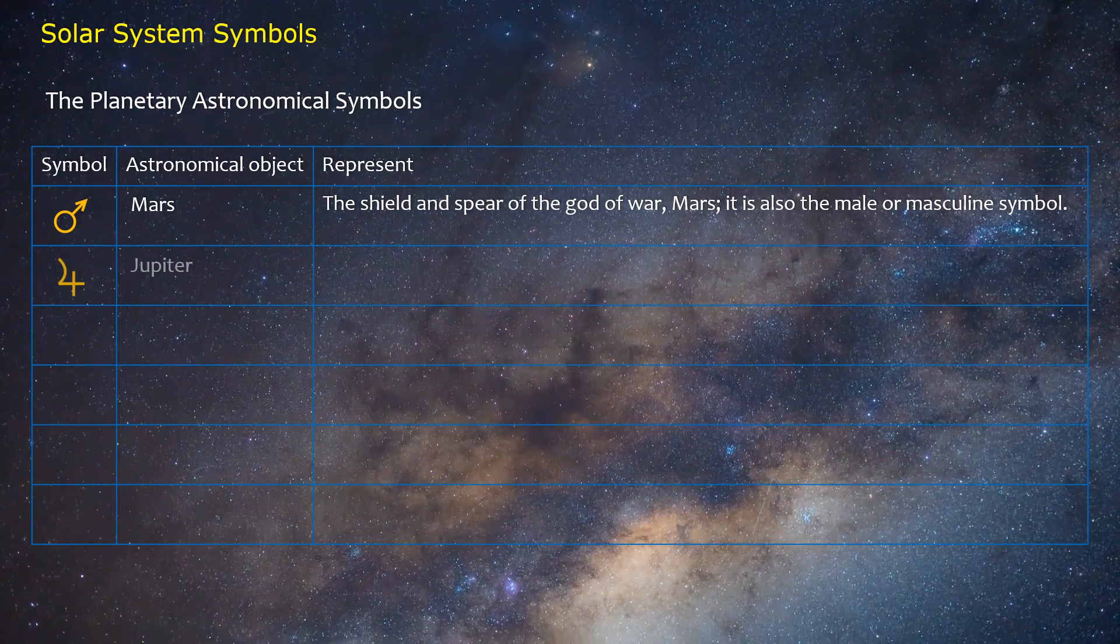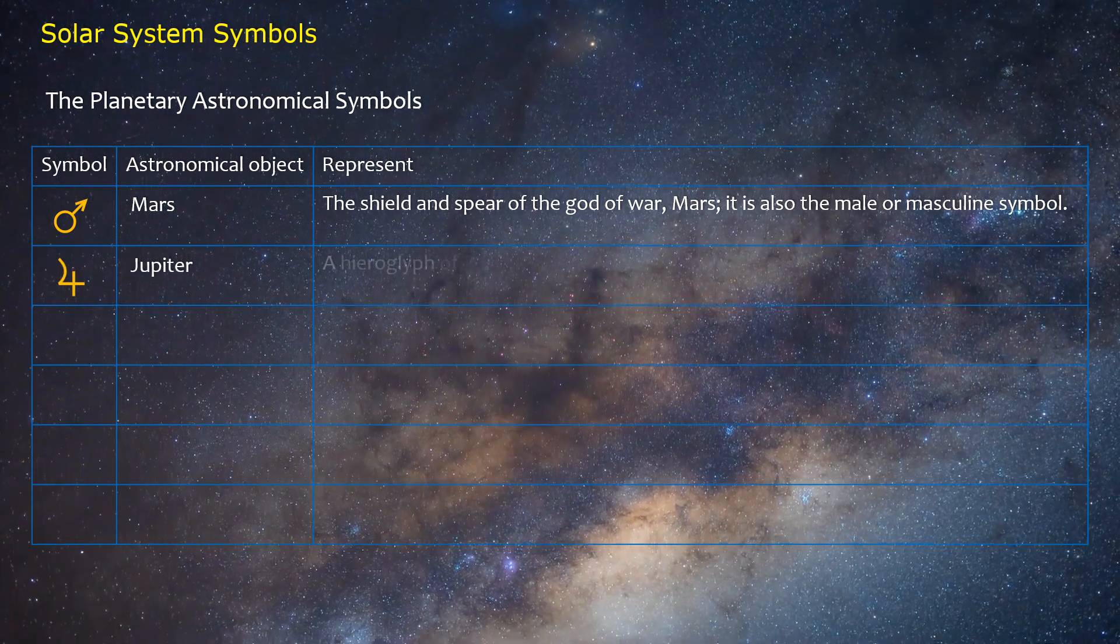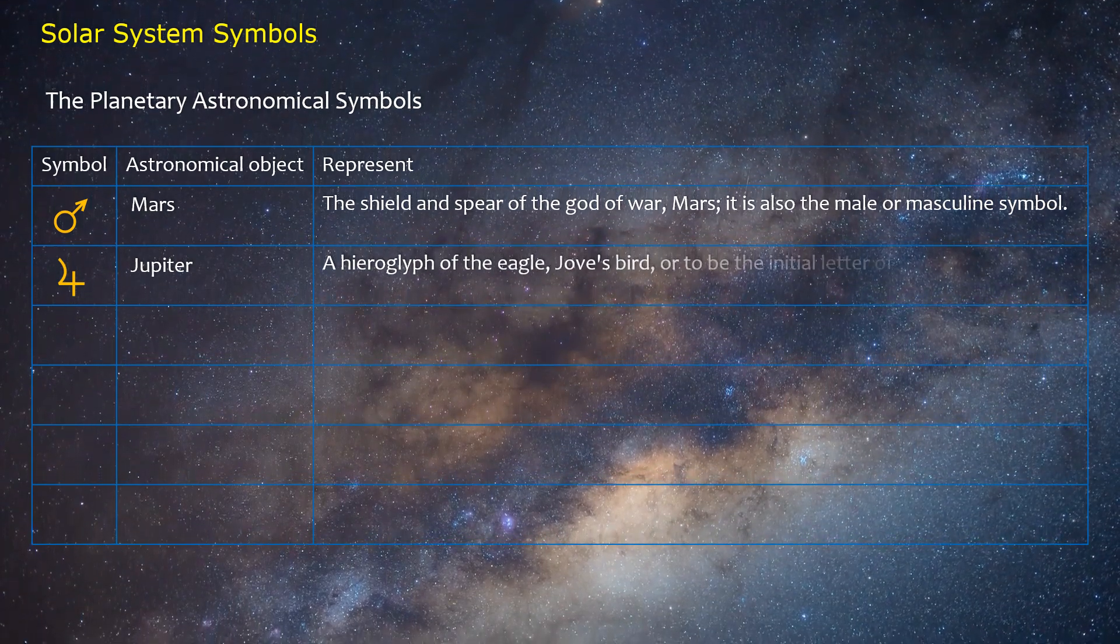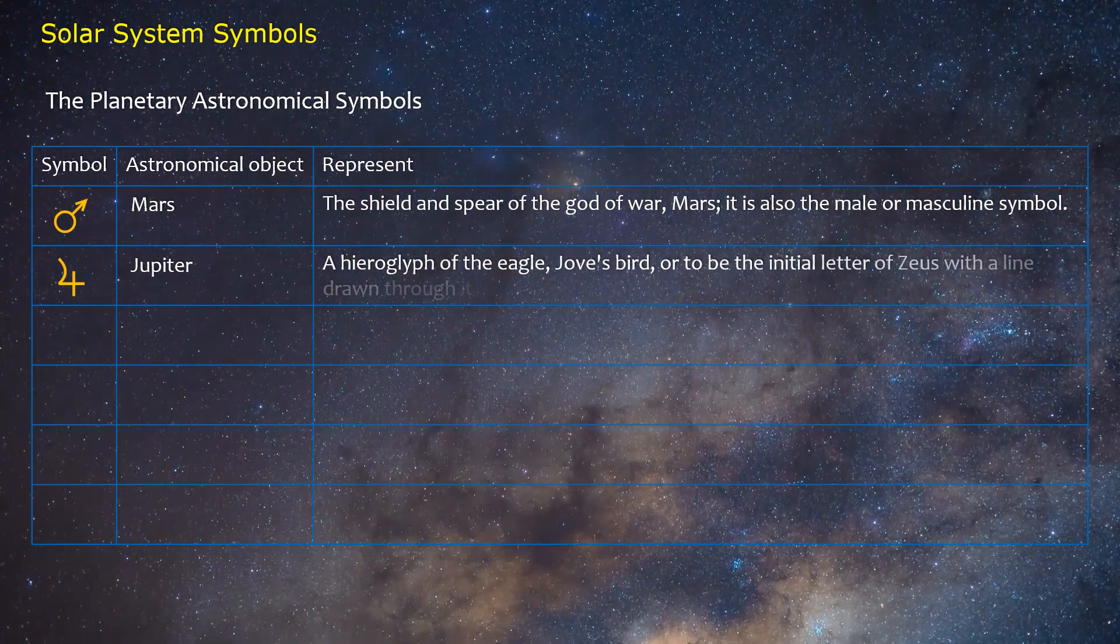Jupiter: A hieroglyph of the eagle, Jove's bird, or to be the initial letter of Zeus with a line drawn through it to indicate its abbreviation.